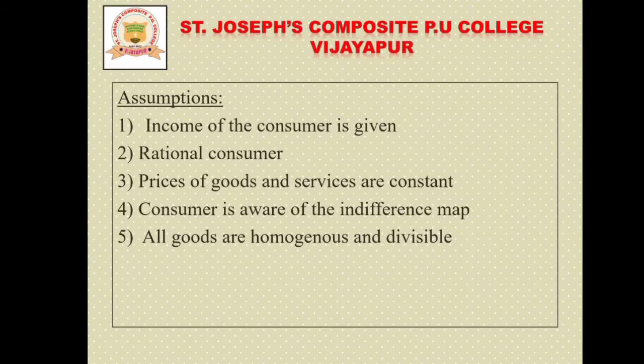The following are the assumptions of the optimal choice of consumer theory. First, the income of the consumer is given. Second, the consumer is rational. Third, prices of goods and services are constant — they are always fixed. Fourth, the consumer is aware of the indifference map. Fifth, all goods are homogeneous and divisible, not heterogeneous.